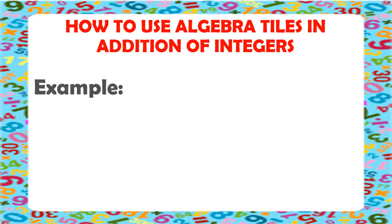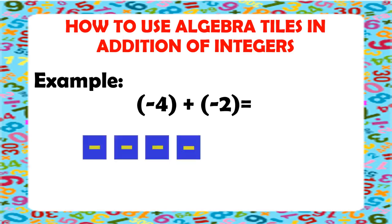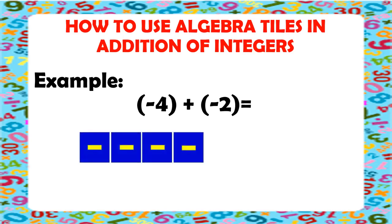Let's have another example. We have negative 4 plus negative 2. So, negative means we have blue tiles. And negative 4 means we have 4 blue tiles. So, let's draw 4 blue tiles. Now, negative 2 means 2 blue tiles. So, let's draw 2 more blue tiles.